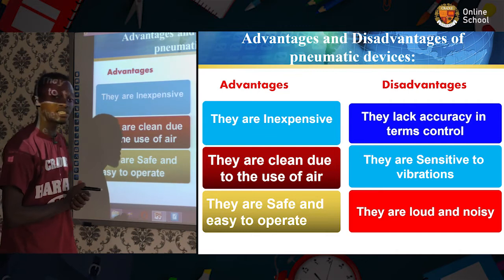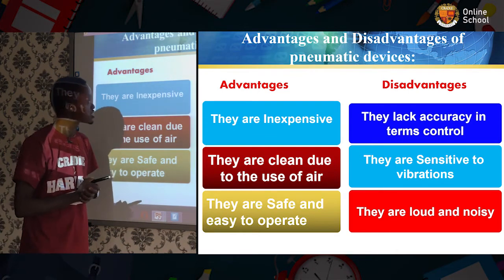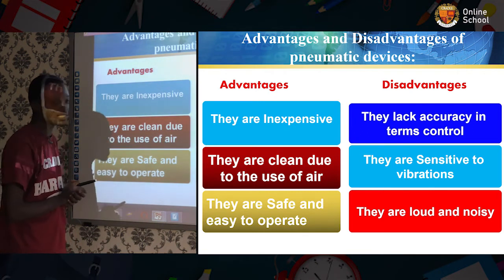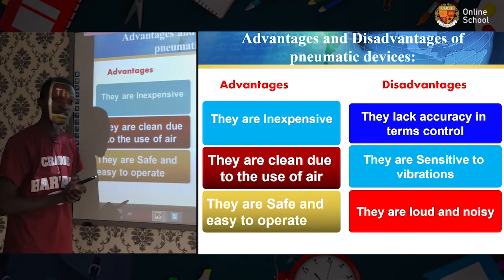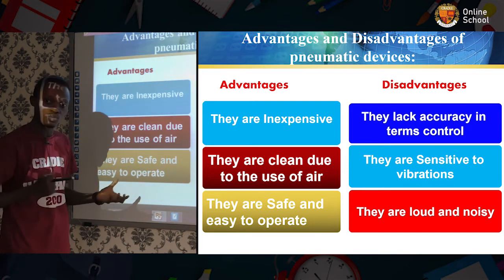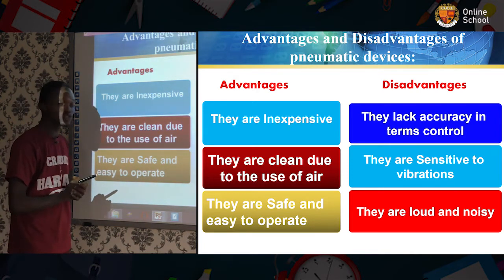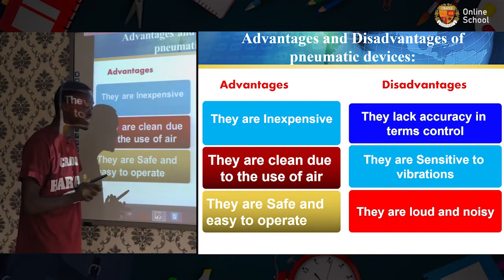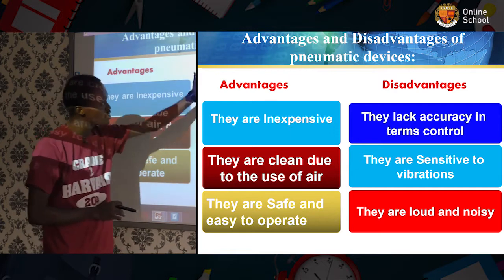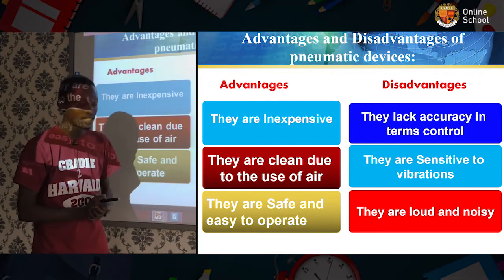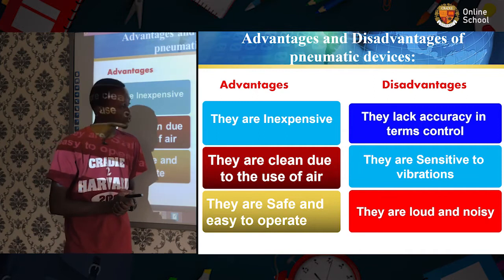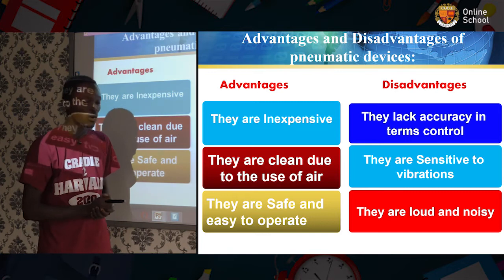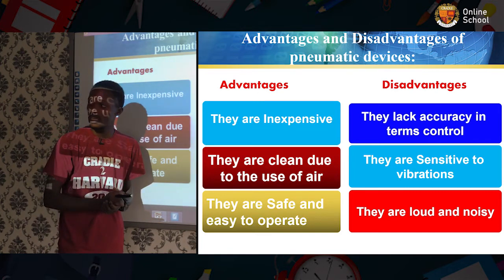Advantages and disadvantages of pneumatic devices. Advantages: they are inexpensive, as with hand pumps; they are clean due to the use of air; and they are safe and easy to operate. Disadvantages: they lack accuracy in terms of control; they are sensitive to vibrations; and they are loud and noisy in operation.